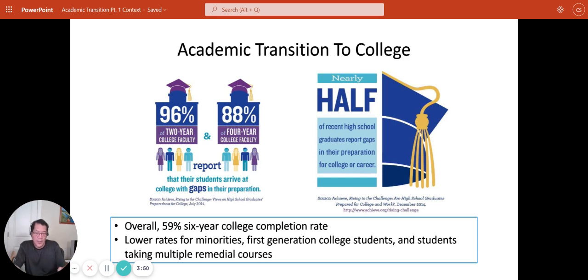In other words, if you look at an incoming class of college students after six years, only 59 percent of them will have graduated with a four-year degree. And that rate is lower for minorities, first-generation college students and students who started multiple remedial courses.